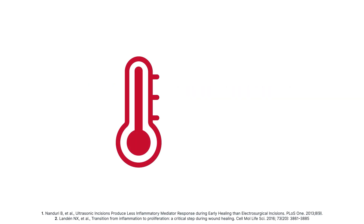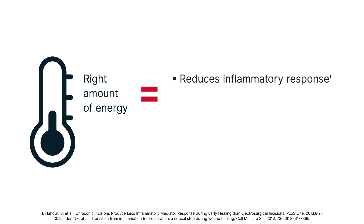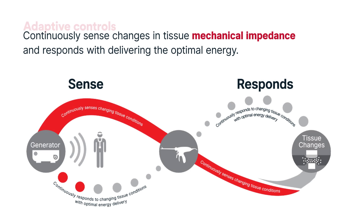Energy device manufacturers focus on developing instruments that deliver the right amount of energy for the desired tissue effect. Lessening the impact on tissue reduces the inflammatory response, which may result in less pain and faster healing. To help accomplish this, some energy device manufacturers use algorithms to detect changing tissue conditions and alter energy output to minimize thermal damage.